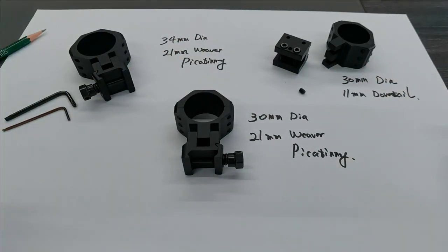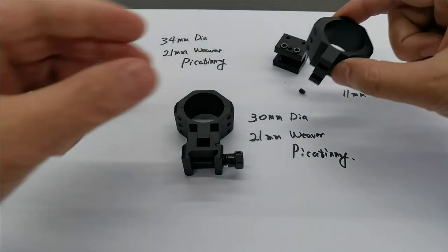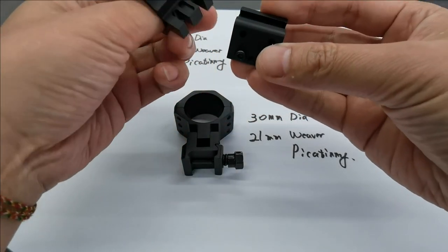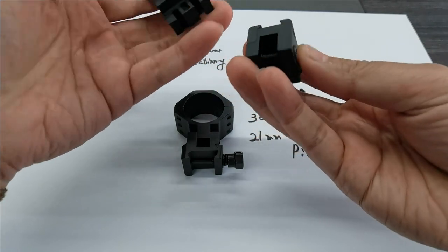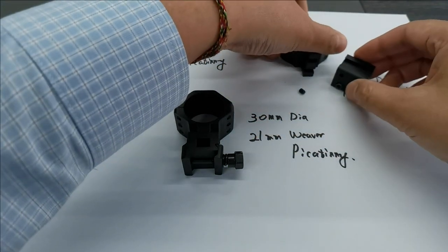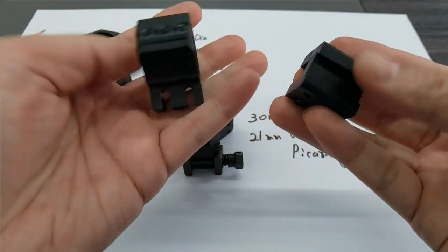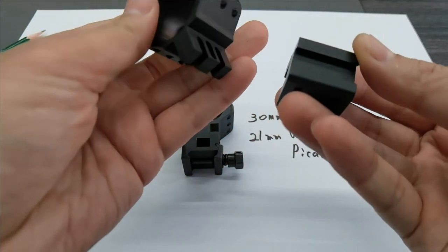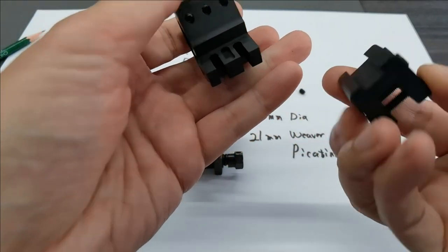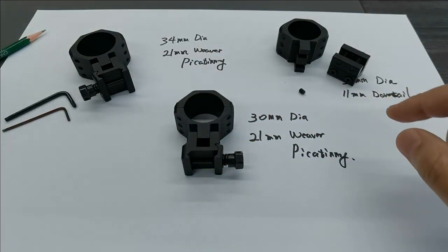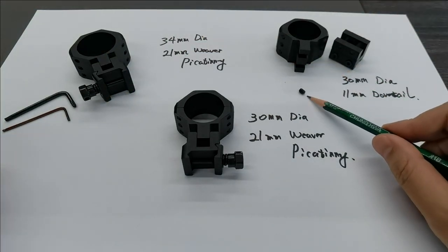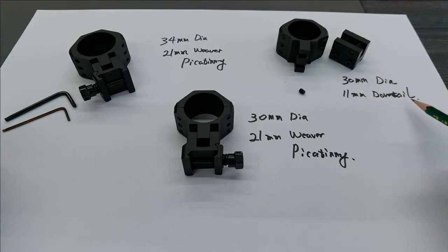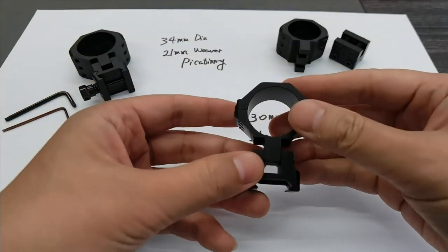This one I take apart. It's our dovetail. I'll show you a little bit of the internal construction of it. That's the dovetail, and that one is the locating pin for the 30mm dovetail mount.